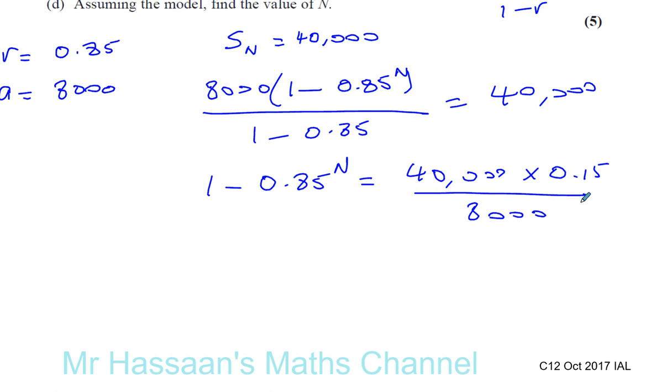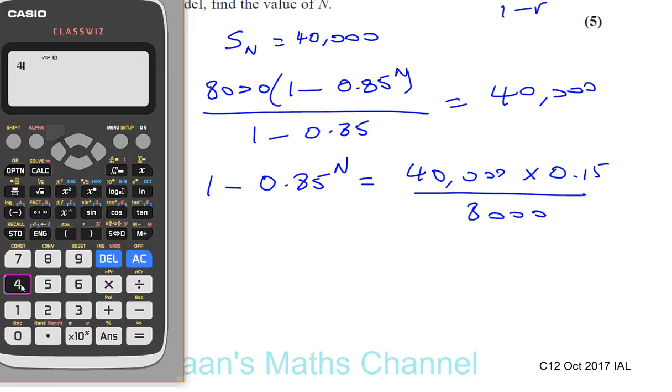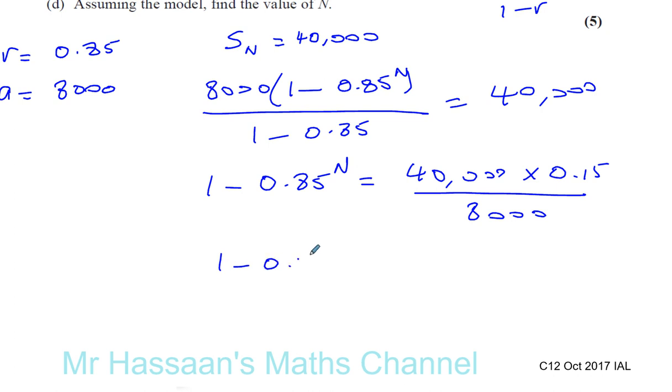We can calculate that: 40,000 times 0.15 divided by 8,000 gives us 3 quarters, or 0.75. So 1 minus 0.85 to the power of N equals 0.75.